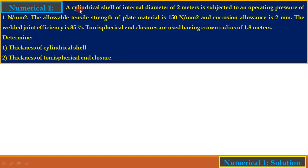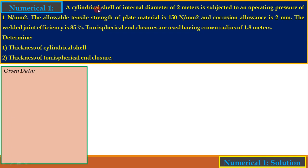Problem 1 statement: A cylindrical shell of internal diameter 2 meters is subjected to an operating pressure of 1 N/mm². The allowable tensile strength of plate material is 150 N/mm², corrosion allowance is 2 mm, and welded joint efficiency is 85%. Torispherical enclosures are used. We need to find the given data first — internal diameter di = 2000 mm.